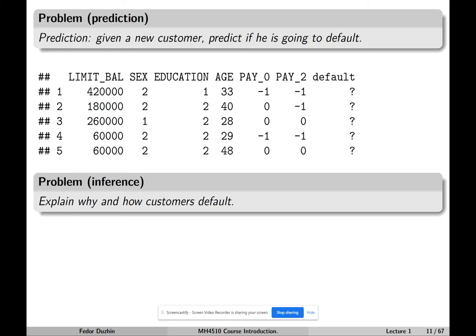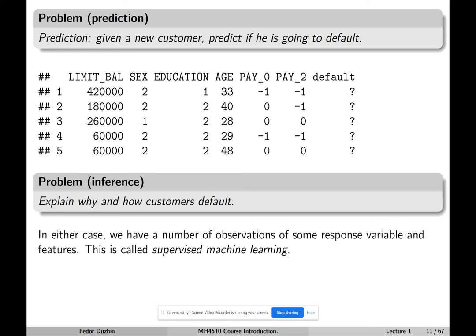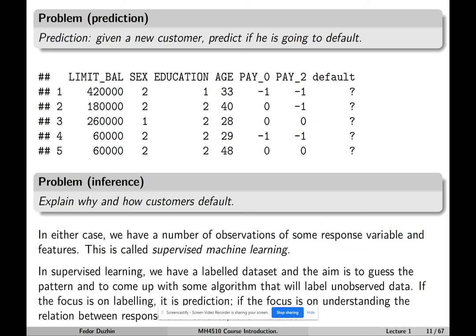Another type of problem is called inference — explain why and how customers default. In either case, we have observations of the response variable and features or predictors. As long as we have explicitly identified our response variable, this is called supervised machine learning. The most important distinction of supervised learning is the fact that we have a labeled dataset, and we want to guess the pattern — how the response variable depends on the features — and come up with some algorithm for predicting or labeling data that is yet unobserved.